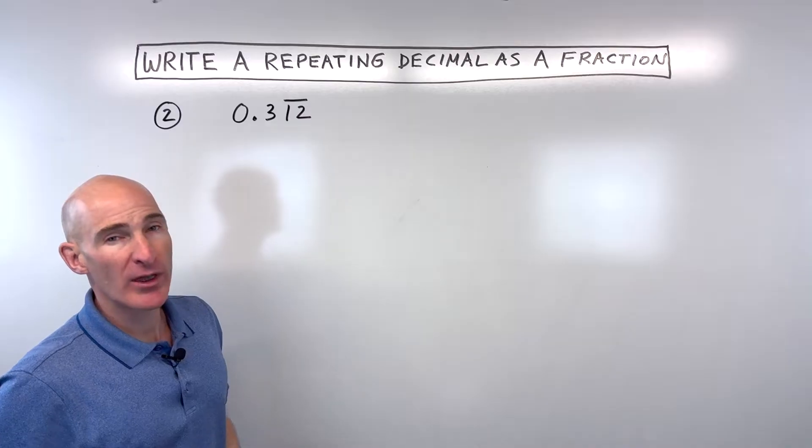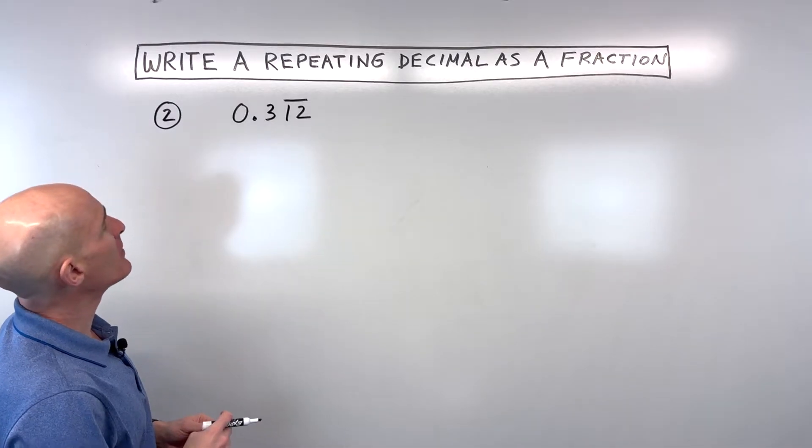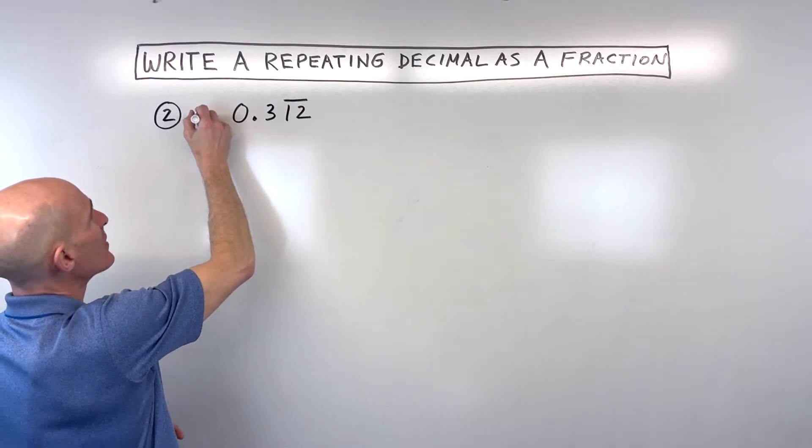So what do we do with this 0.3 here in front? Well, there's a couple different ways to look at it. But let's take a look at one method here, which is, let's go ahead and say that this is our number n.